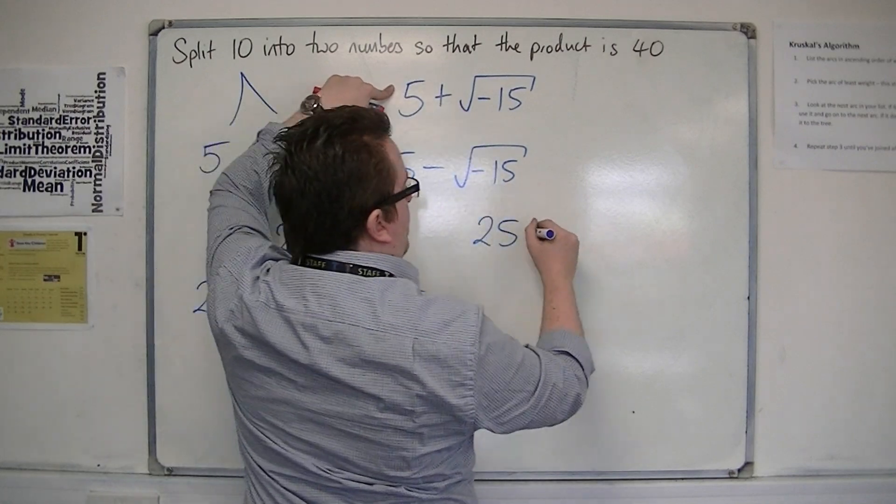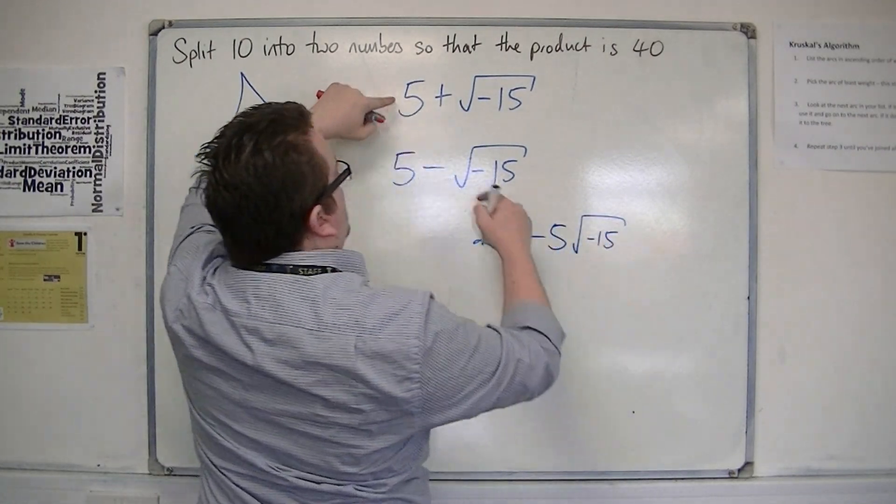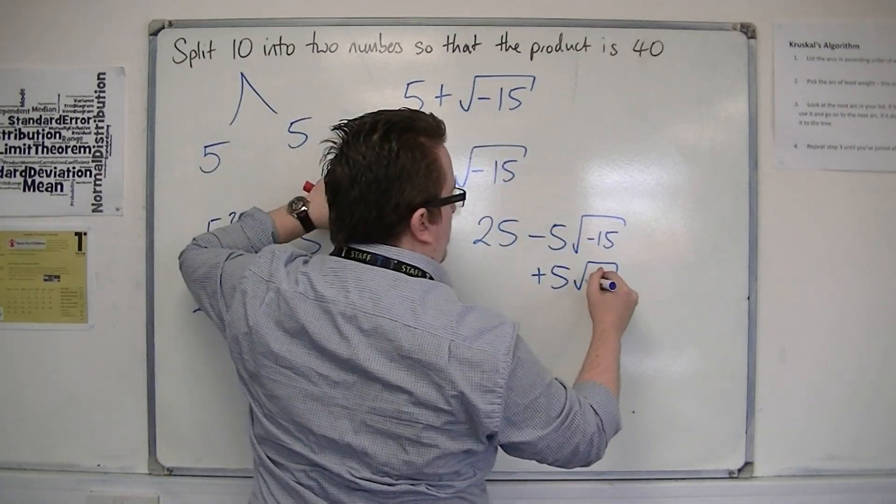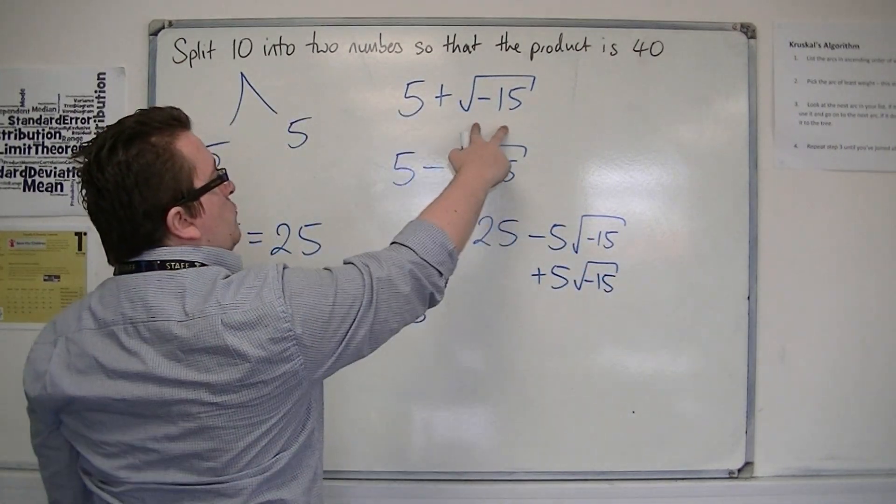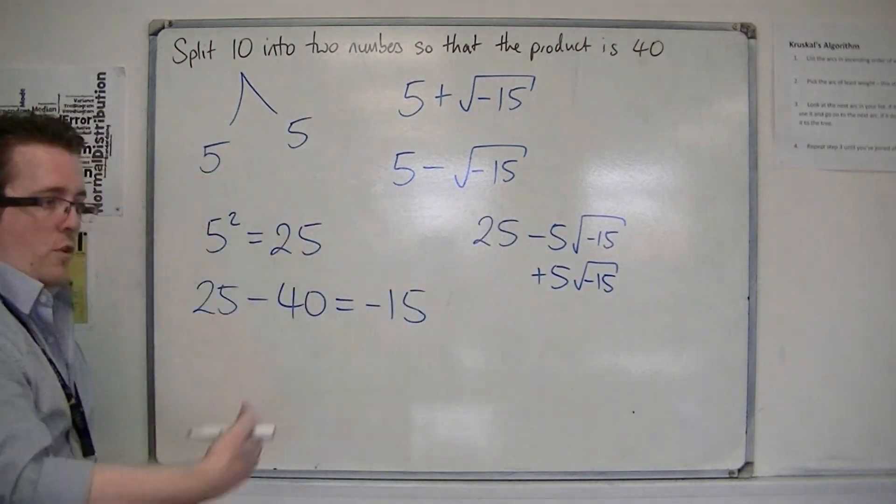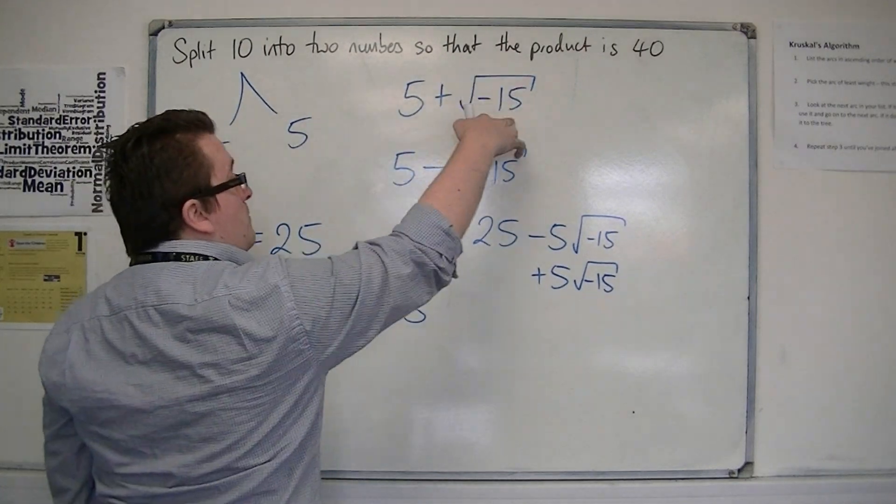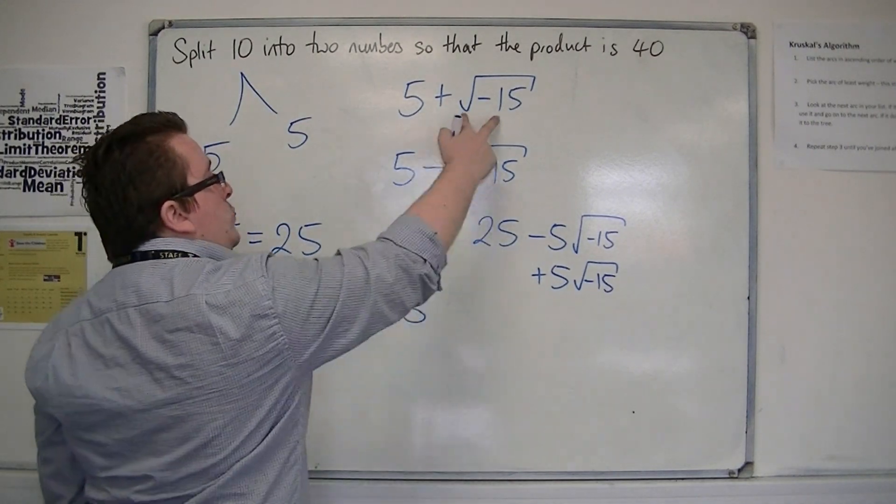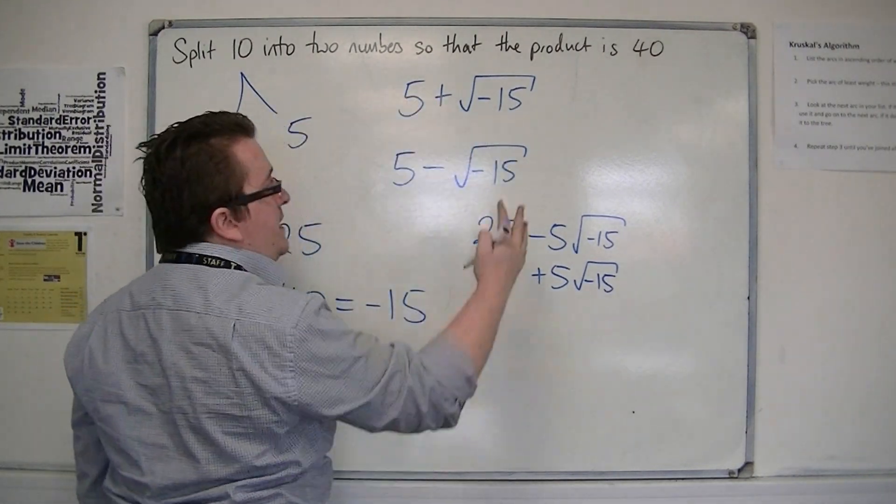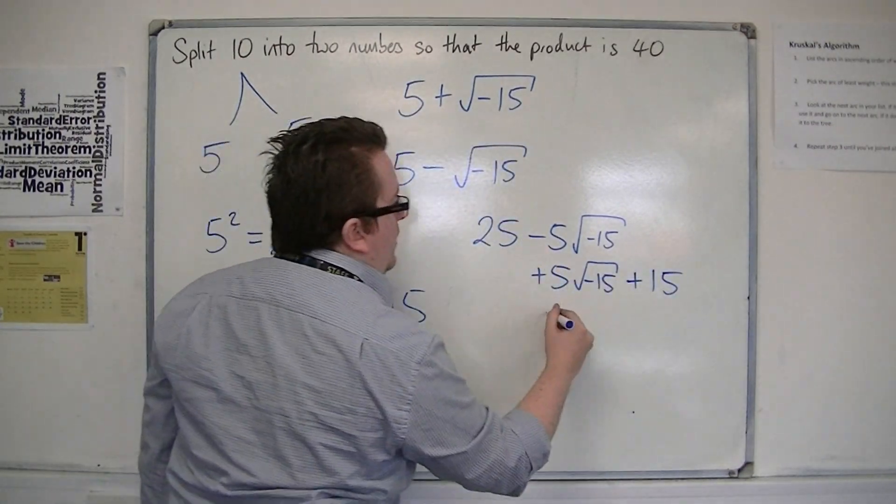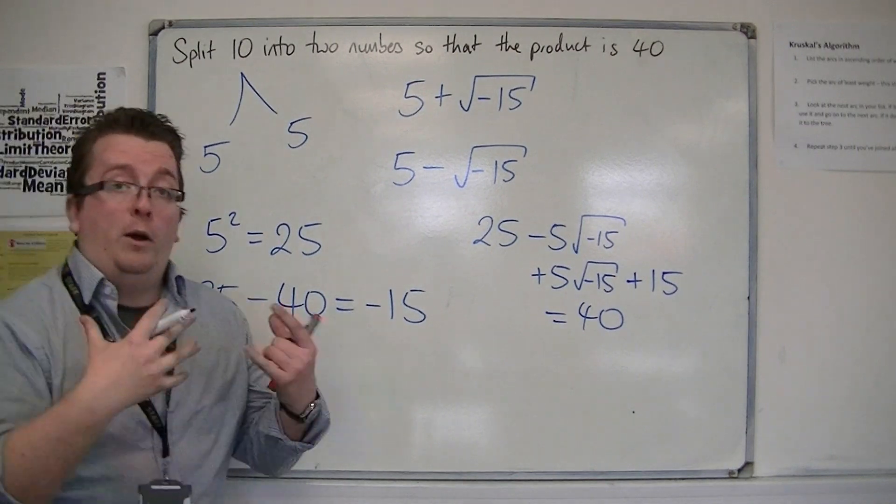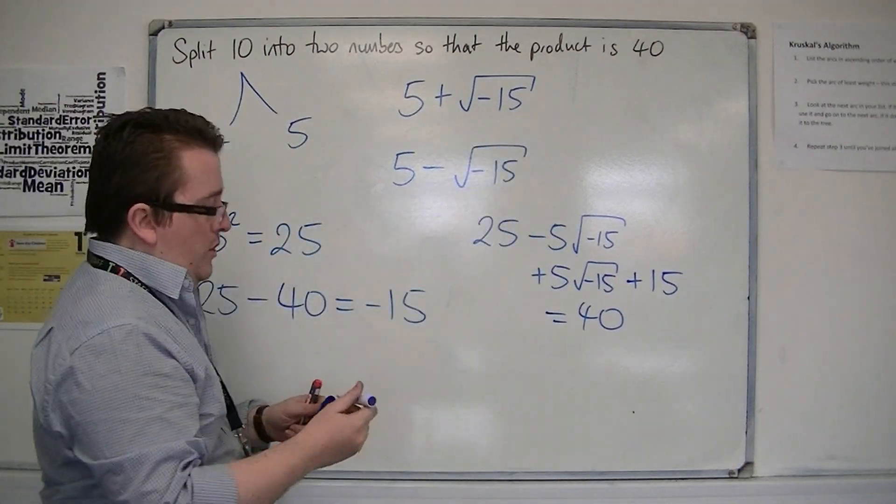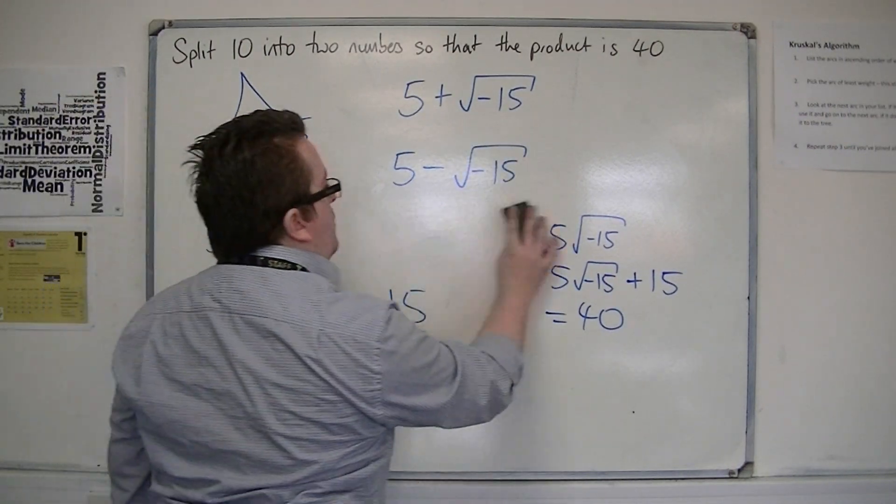5 times root minus 15, plus 5 times minus root 15. And then you get root minus 15 times minus root minus 15, which would multiply together like minus times minus 15, so plus 15, which makes the 40. That is supposing that you can multiply these two things together even if they existed. So these would be the two numbers. That was what we're presupposing here.